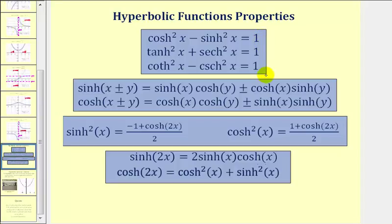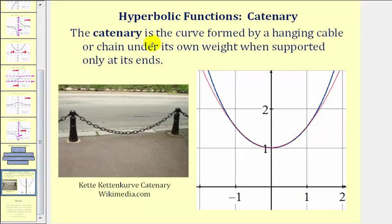I want to end by talking about one of the main reasons why hyperbolic functions are so important. A catenary is a curve formed by a hanging cable or chain under its own weight when supported only at its ends. For example, the chain in this picture is forming a catenary, and a catenary is formed by a hyperbolic function. It's often mistaken for a parabola formed by a quadratic function, but it's actually a catenary formed by a hyperbolic function.